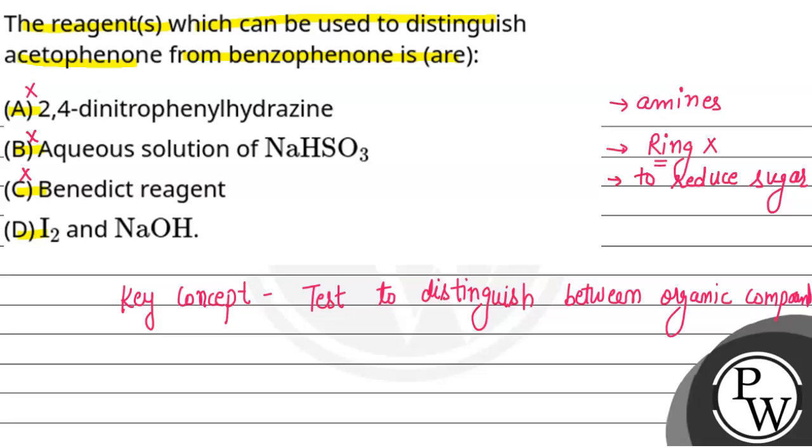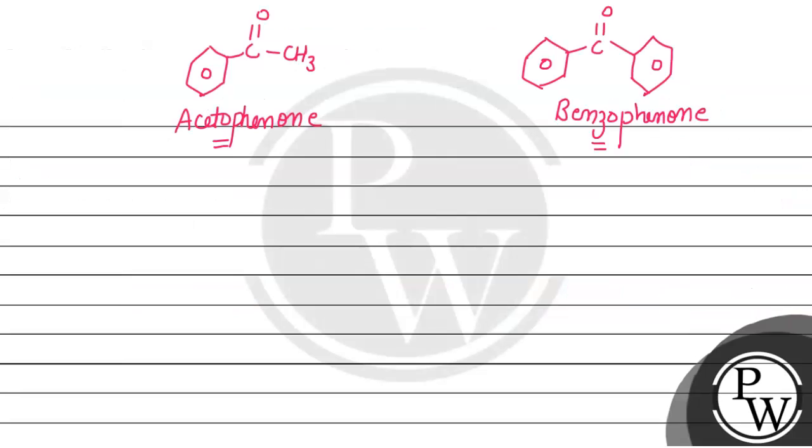Now, we have option D. That is iodine and sodium hydroxide. If we are talking about iodine and sodium hydroxide, we will call this test the iodoform test.